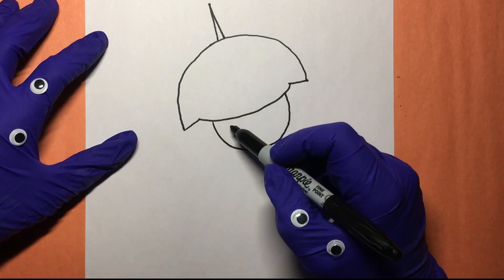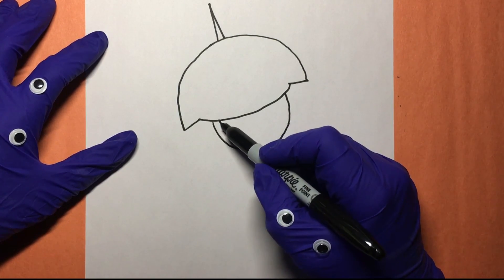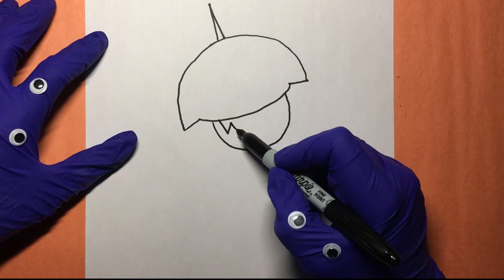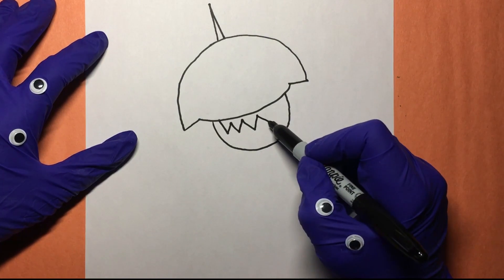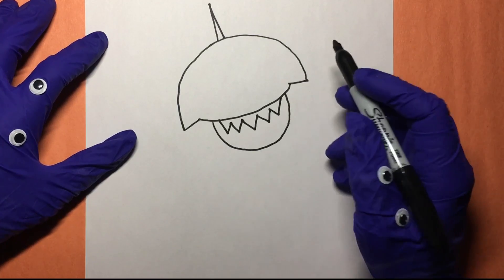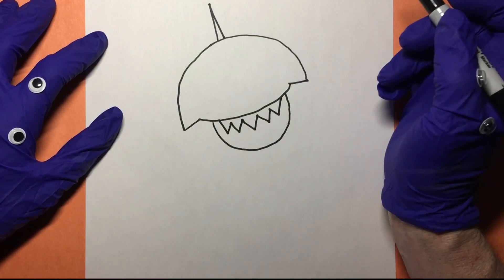And then we can make some teeth. He's got those sharp teeth, don't he? One, two, three, four, five. Five sharp teeth. That's looking nice.